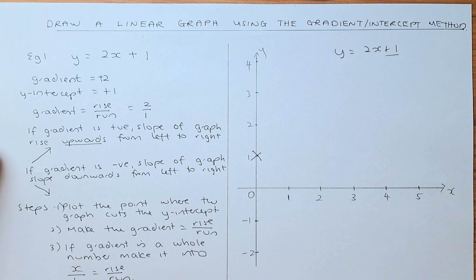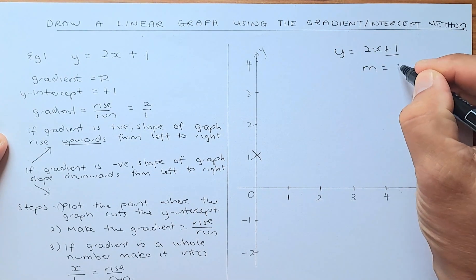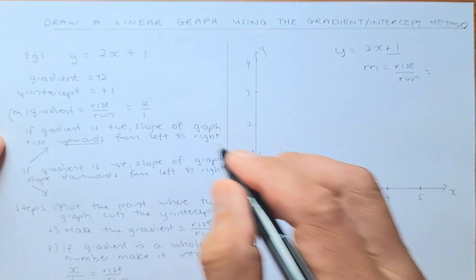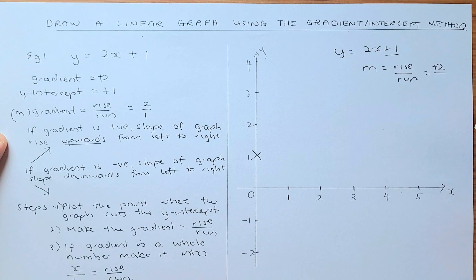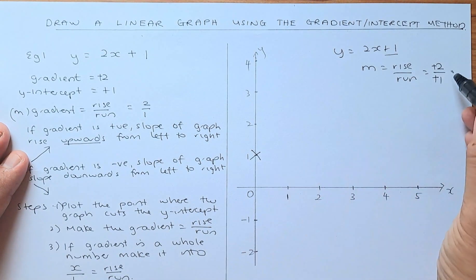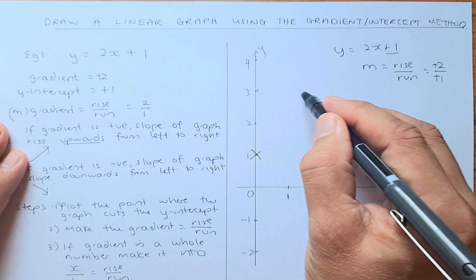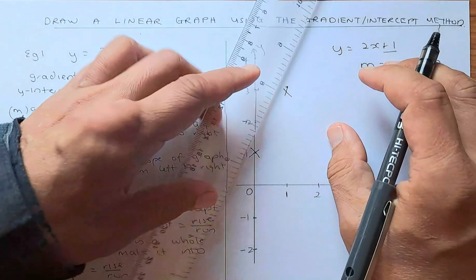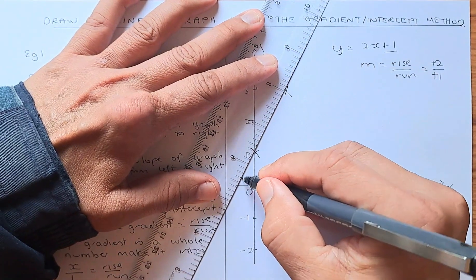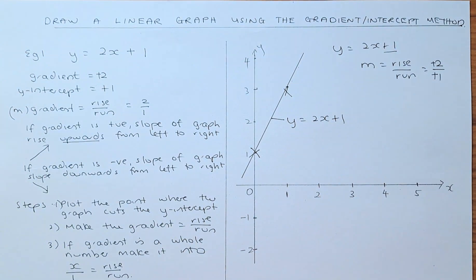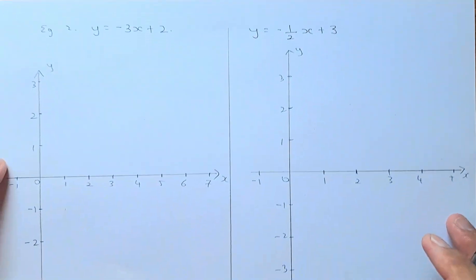The second point uses the gradient. The gradient m equals rise over run. In our case the rise is plus 2 and the run is plus 1. From the first point, you go up 2 and then run across 1 — that's the next point. Finally, draw the line through both points and label the graph y equals 2x plus 1. That's it!